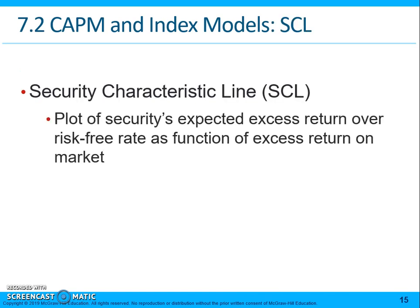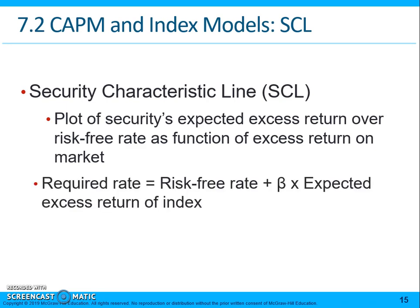The security characteristic line is the plot of a security's expected excess return over the risk-free rate as a function of the excess return on the market. The required rate is simply the risk-free rate plus beta times the expected excess return on the index — this gives us the required rate of return for a given security. If the return is less than that required return, we would not want to purchase that security. If it is greater, we would, because it would generate positive alpha.